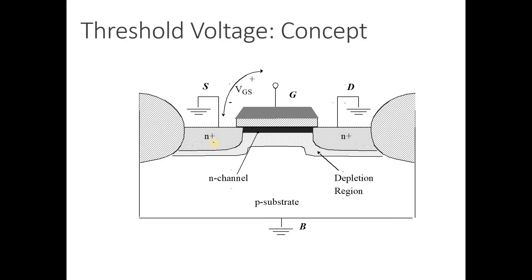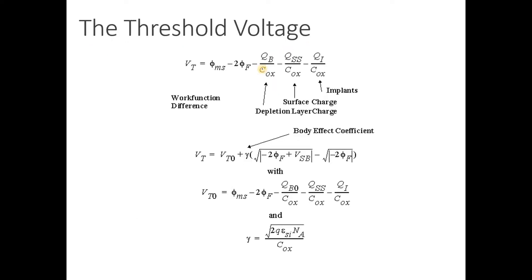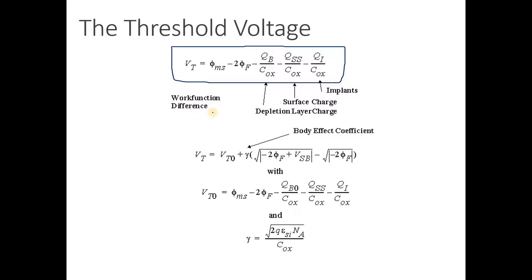When we combine N-type and P-type material together, a depletion region forms at the interfaces — a region where there are no charge carriers. Mathematically, the threshold voltage has a certain expression, but going into full detail is beyond the scope of this particular course. The key thing is to understand what threshold voltage is and what its various components are.